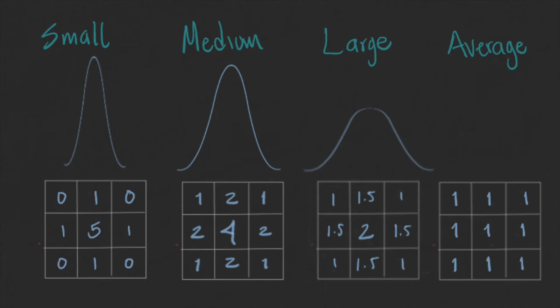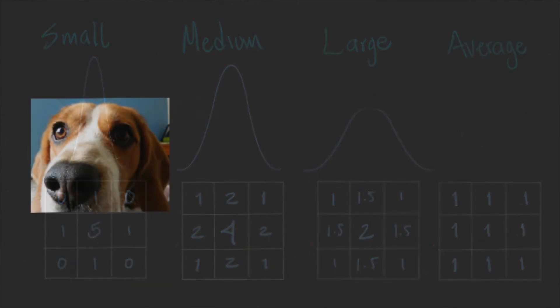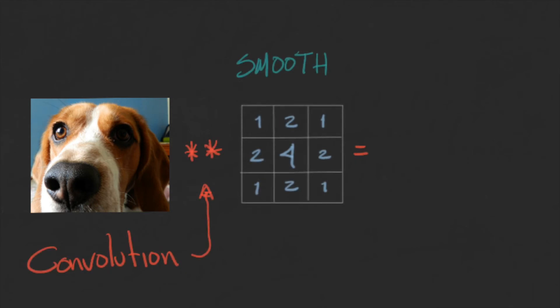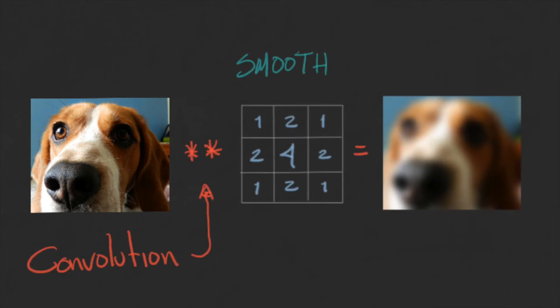We can use any type of shape and weights in the kernel to achieve an effect. For example, we already talked about the average and the Gaussian kernels. These two can be used as low-pass filters to remove noise or to create a blurry image.